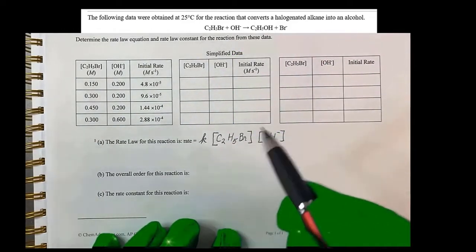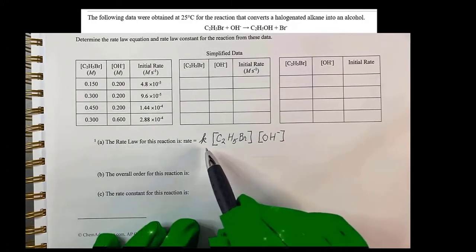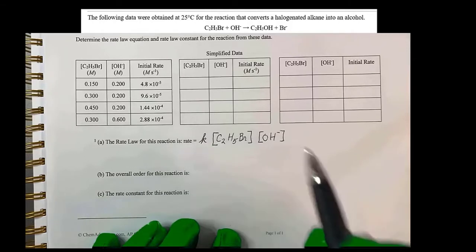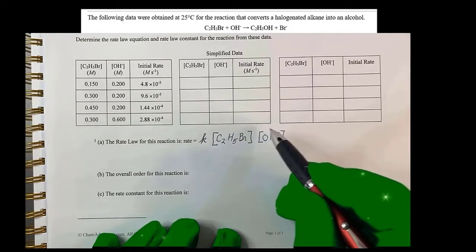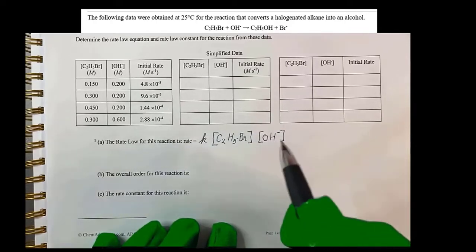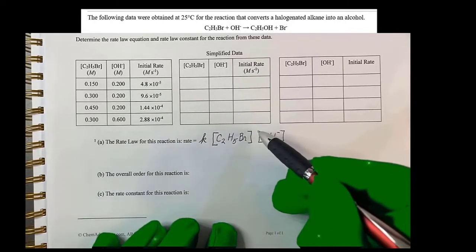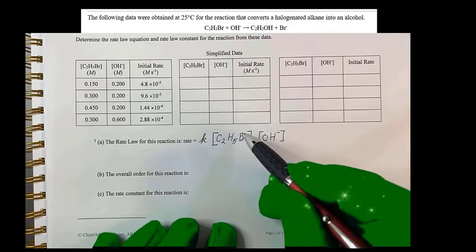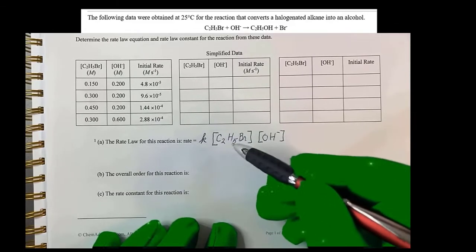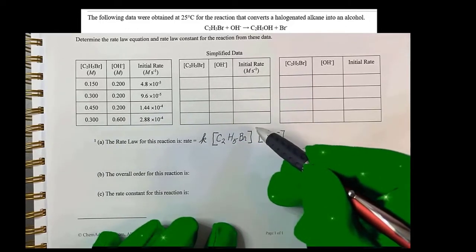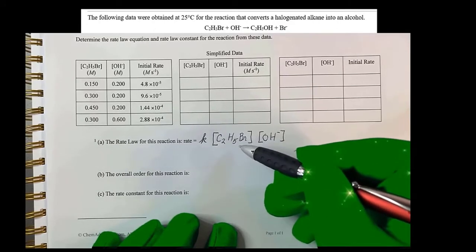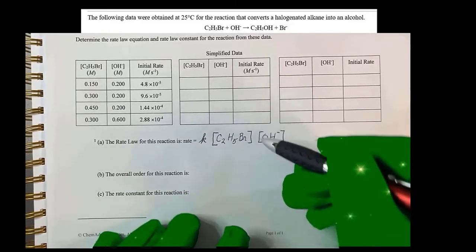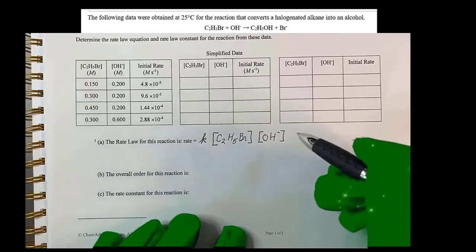The rate is equal to a constant times something about this concentration and this concentration. But the trick is that there will be an exponent for each of these. And that exponent is what we really have to find out. This exponent could be zero, which means the number becomes one. Or it could be one, indicating that as this is more or less concentrated, our speed goes up. Or it could be two.